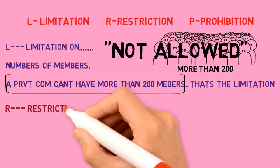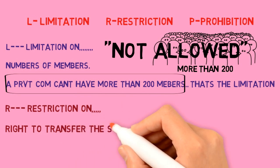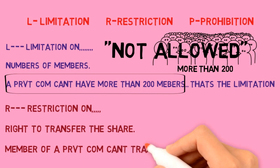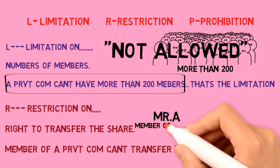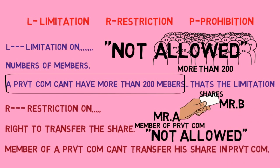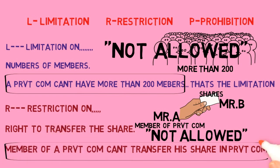R stands for Restriction — restriction on the right to transfer shares. A member of a private company cannot transfer his shares. For example, Mr. A, who is a member of a private company, has shares and wants to transfer them to Mr. B. This is not allowed. A member of a private company cannot transfer his shares.